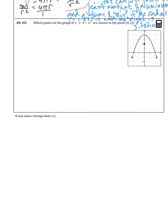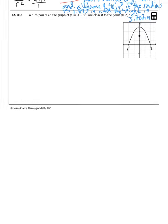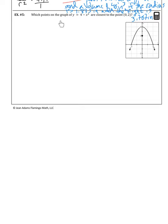Our last problem involves finding which points on a graph are closest to another point. We have the graph y = 4 − x², a downward-opening parabola, and we want to know which points on this graph are closest to the point (0, 2). From geometry, the shortest distance (minimizing distance) is always perpendicular. The unknown points on the parabola are (x, y), and by symmetry there will be two such points.